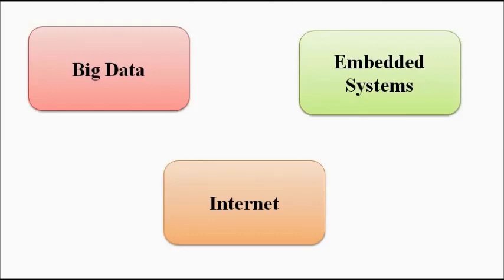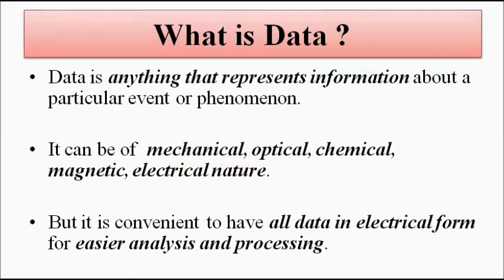Before we go into the discussion related to big data, we all know what data is. In simple words, data means meaningful information — information which can be used for a particular objective, which is of use to us in accomplishing a task. Anything that represents meaningful information about a phenomenon or a particular event is called data. Data can be of various types; the nature of data can be different — it can be mechanical, optical, chemical, magnetic, electrical, physical, whatever.